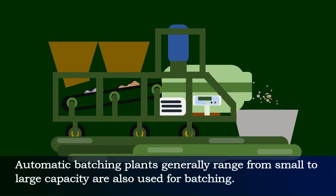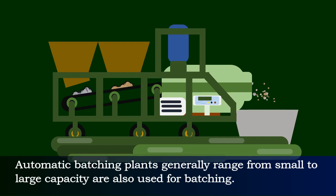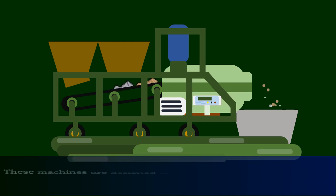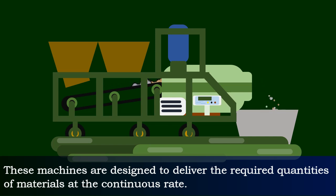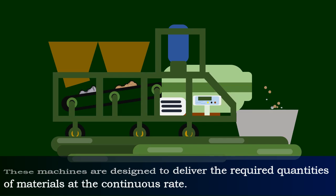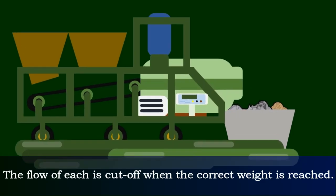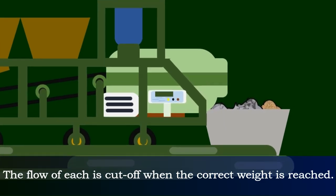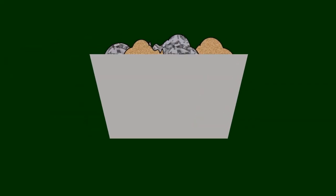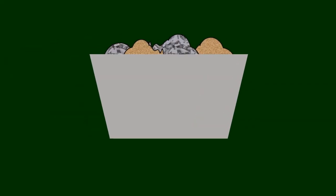Automatic batching plants, generally ranging from small to large capacity, are also used for batching. These machines are designed to deliver the required quantities of materials at a continuous rate. The flow of each material is cut off when the correct weight is reached, and the required materials are collected at a designated point.